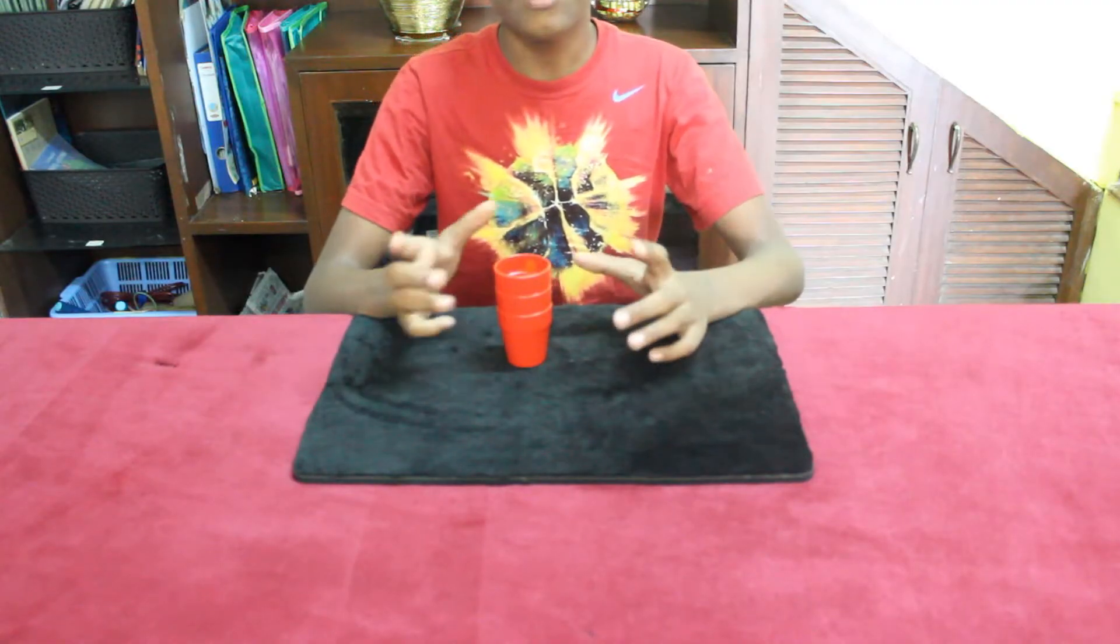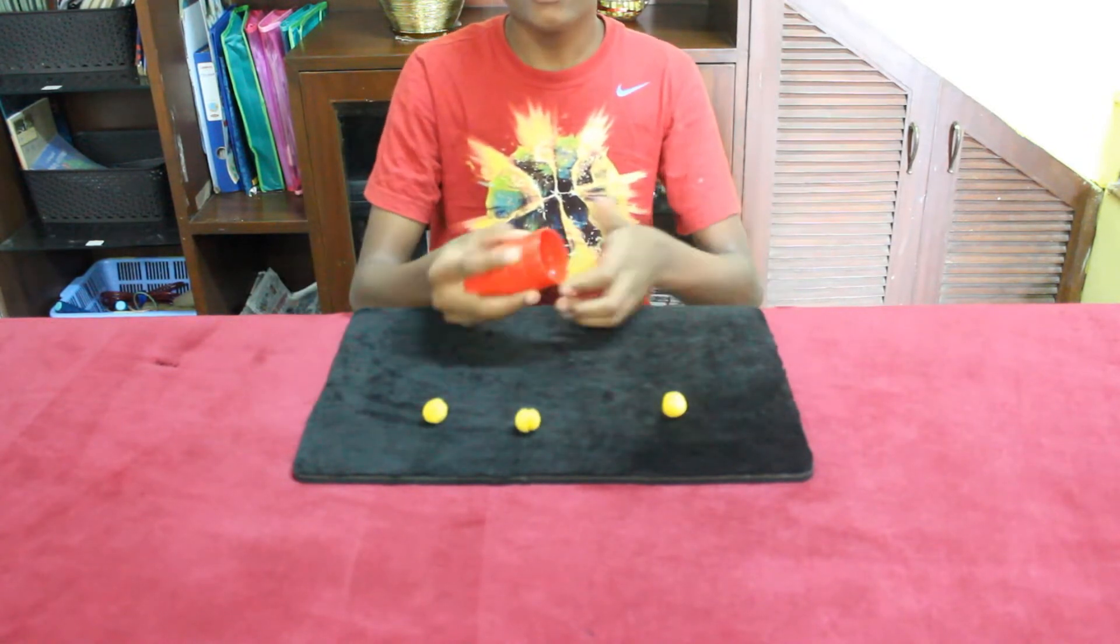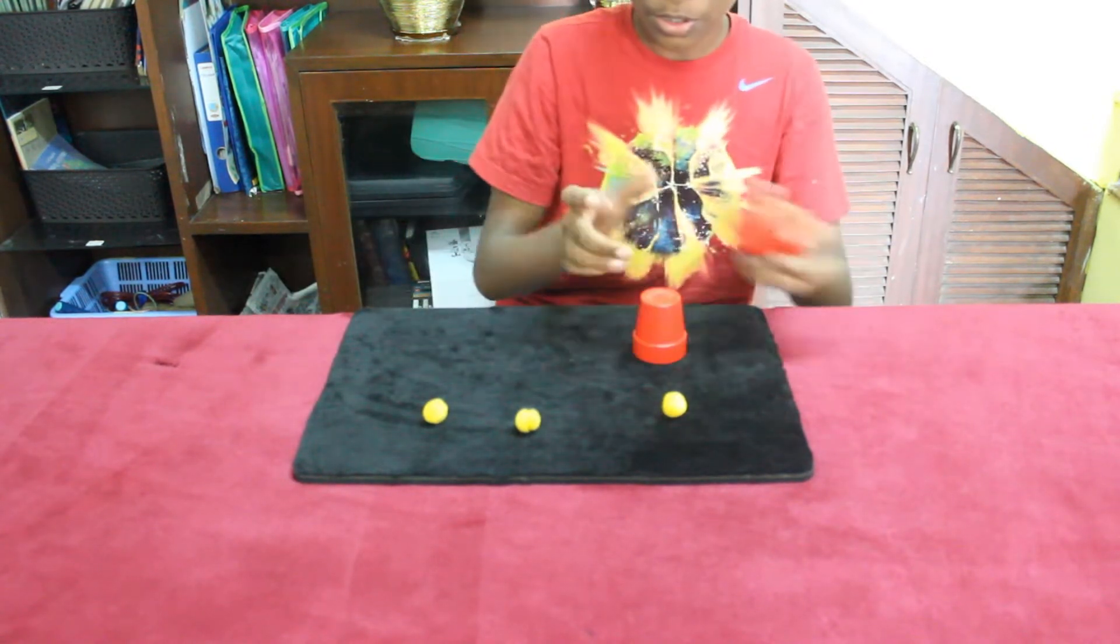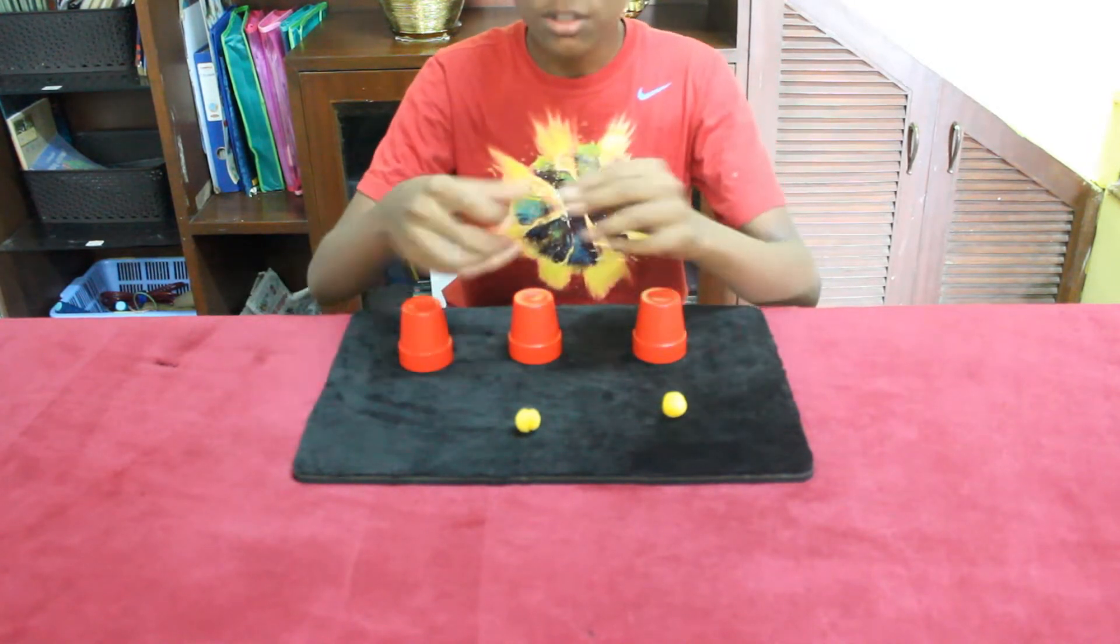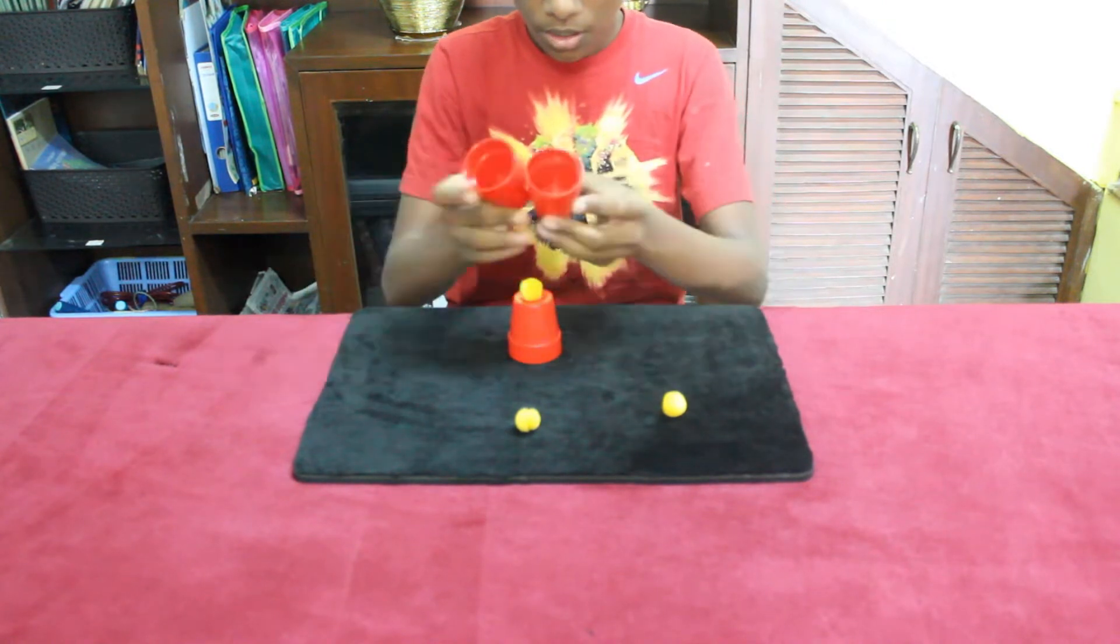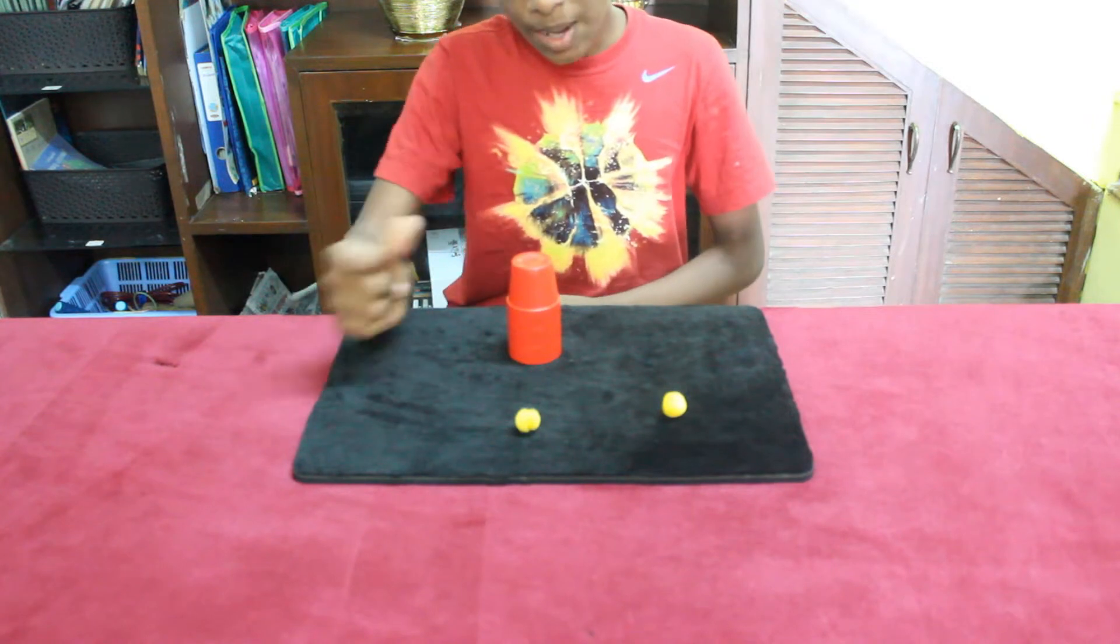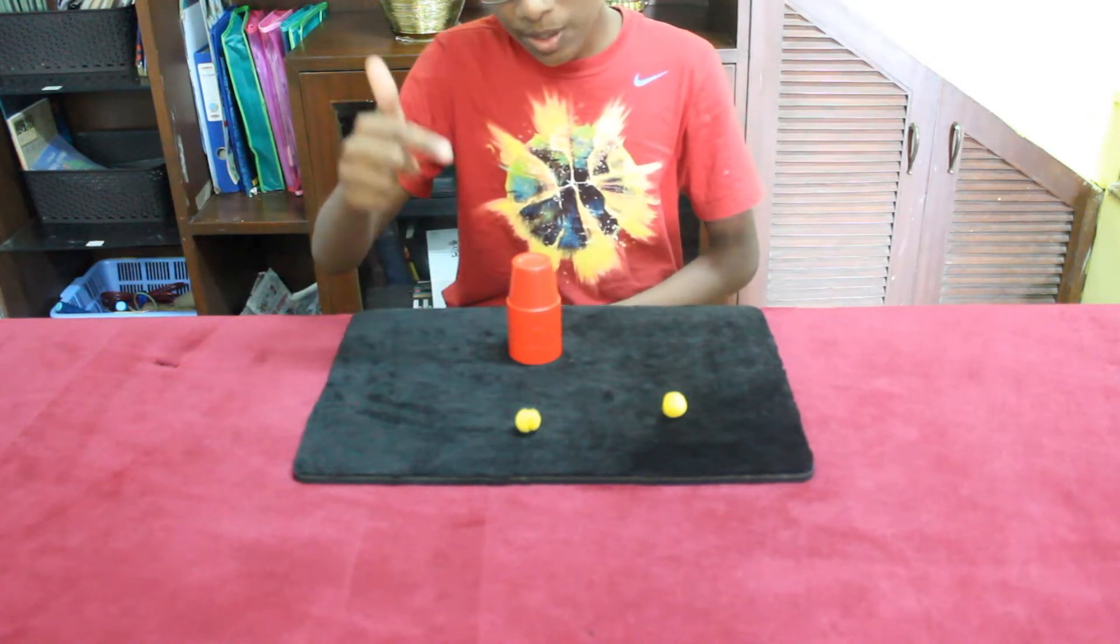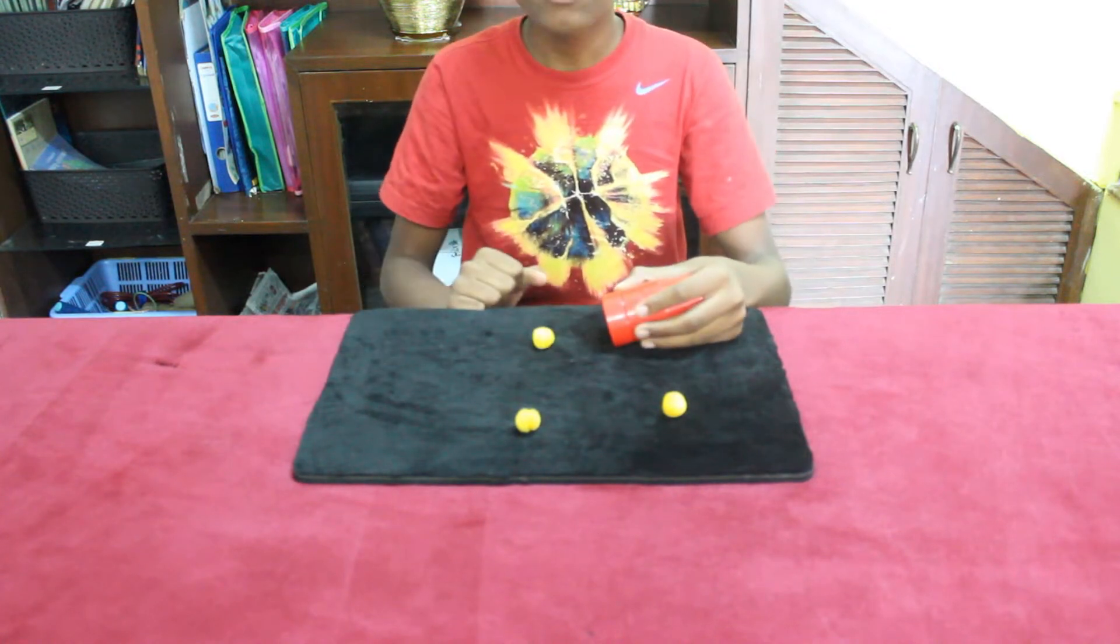Alright guys so here's the performance of this effect. I have three balls and three cups. So here's what I'm going to do with them. Now watch. You take one ball and you put it on top of the cup like this. Now watch this. All I have to do is snap my fingers and the ball actually passes through the cup all the way to the bottom. Just like that.